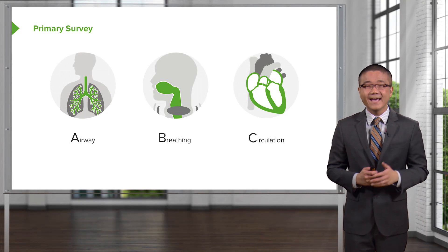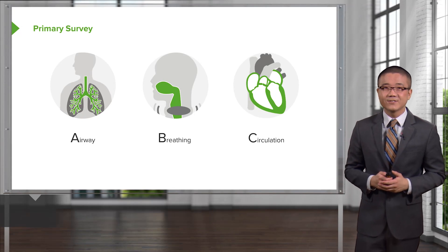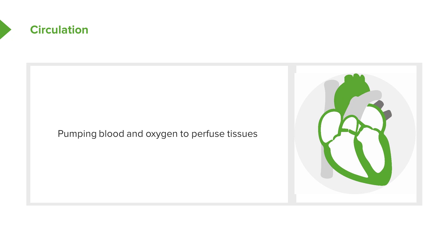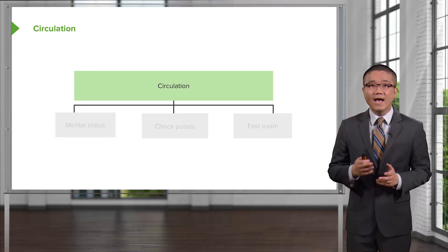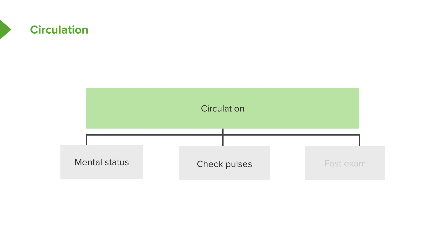When you have secured airway and ascertained that the patient is moving air, we move on to C for circulation. In circulation, we evaluate the heart's ability to pump blood and perfuse the tissues. Quick checks of mental status — if the patient is oriented and conversational, they likely have perfusion to the brain. Check their pulses; for a patient to have distal pulses such as the radial, DP, or dorsalis pedis pulses in the feet, they need at least enough of a pressure head. Lastly, to assess intra-abdominal bleeding, we perform what's called a FAST examination.